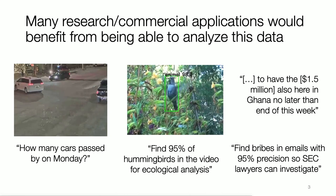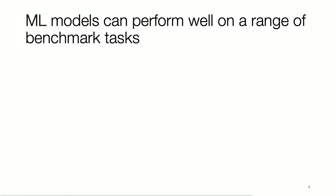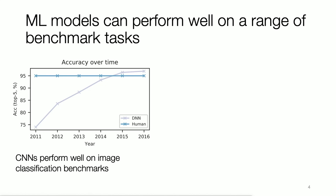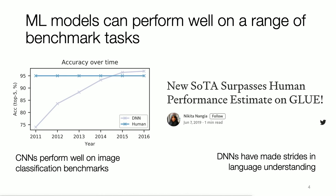Our collaborators in the Stanford Ecology Department are interested in finding hummingbirds in video for ecological analysis. And the SEC or lawyers may be interested in finding examples of bribes. Luckily for us, machine learning models now perform well on a range of benchmark tasks, which has largely been driven by research in both academia and industry. For example, CNNs can now perform well on image classification benchmarks, supposedly outperforming human performance. And there's been great strides in language understanding via BERT and other large models.